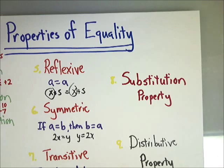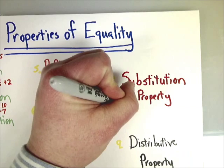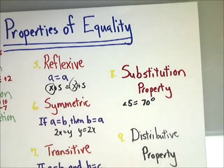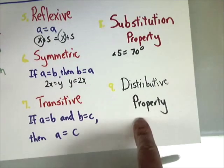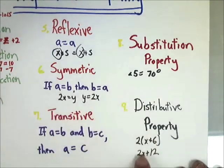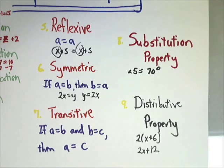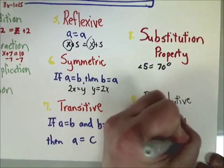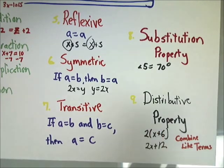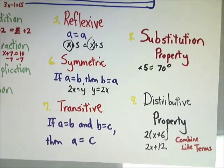The substitution property is simple - if angle 5 equals 70 degrees, any time you write a statement with angle 5 in it, you can substitute in 70 degrees. It's just plugging in something for X, and that's the substitution property of equality. The last one is the distributive property, which you've done many times. Also, combining like terms - for instance, combining 2X and 3X to make 5X - falls under the distributive property heading.